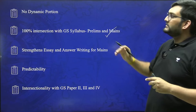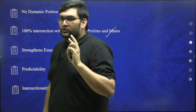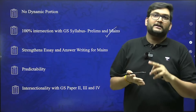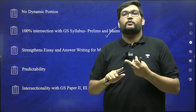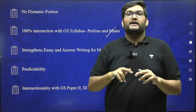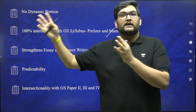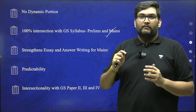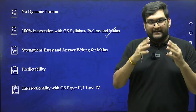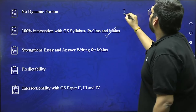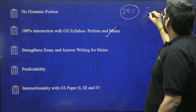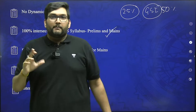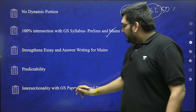If you don't take history as an optional, you still have to study history — for prelims you have to study ancient, medieval, modern, art and culture; for mains you have to study world history, post-independence and modern India. By taking history as an optional, you are basically covering 25% of the prelims syllabus, and for GS Paper 1 you are covering 50% of the syllabus automatically. But history doesn't stop there — it extends into GS Paper 2, 3 and 4 as well.